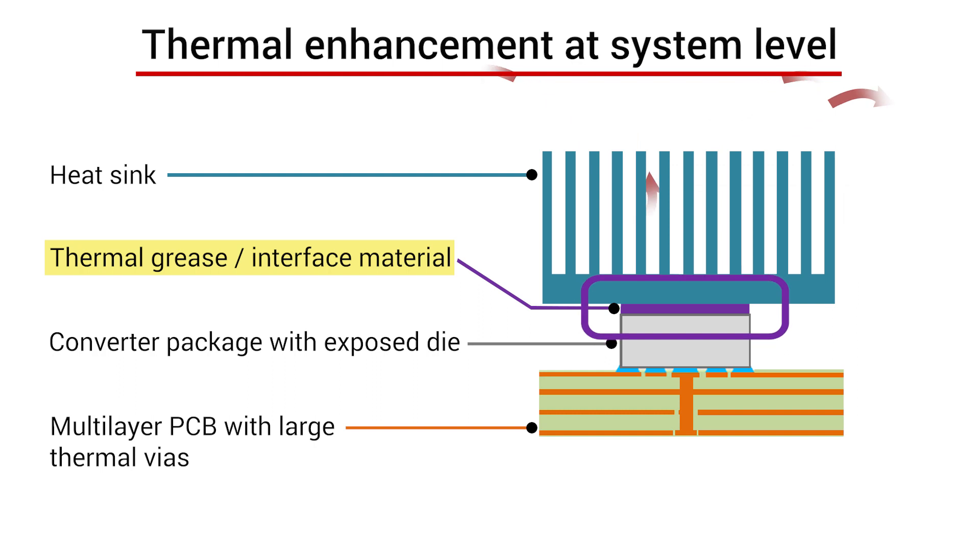A thermal grease is applied to the top of the device which helps conduct heat from the IC to the heatsink. The heatsink then carries the heat away upwards from the IC by providing a large surface area for the heat to dissipate through. This enables heat dissipation on the top and bottom side, also known as dual-side cooling.